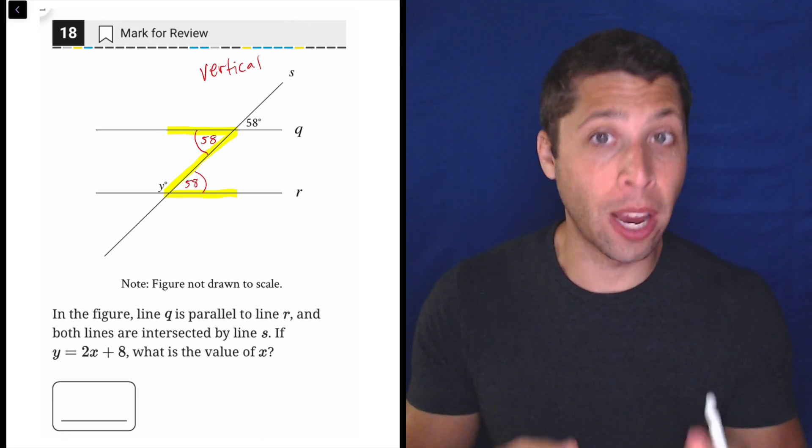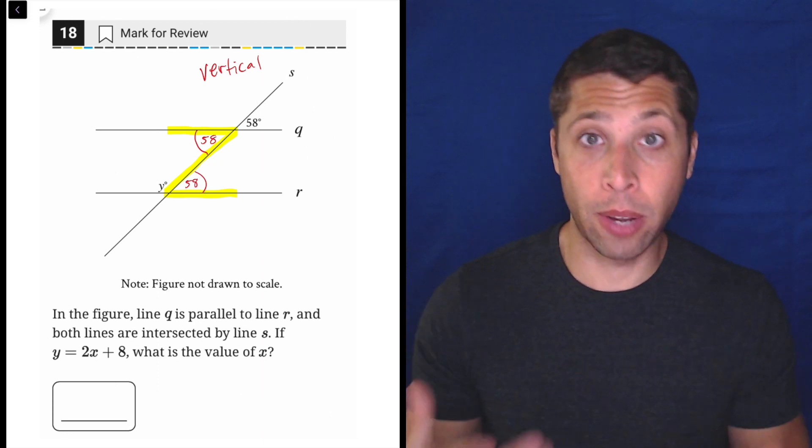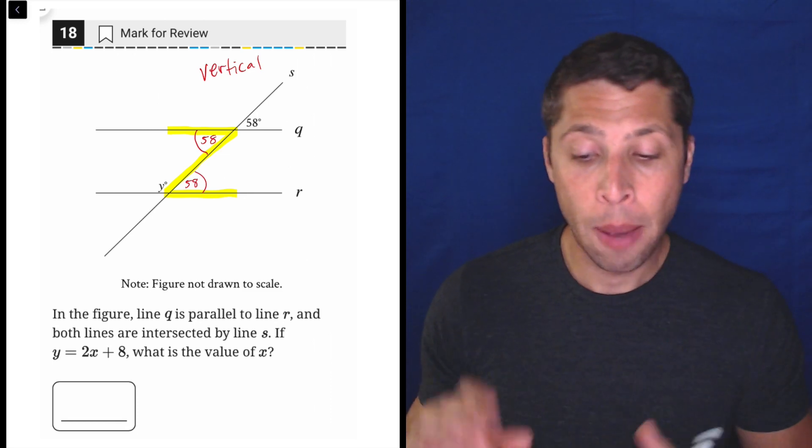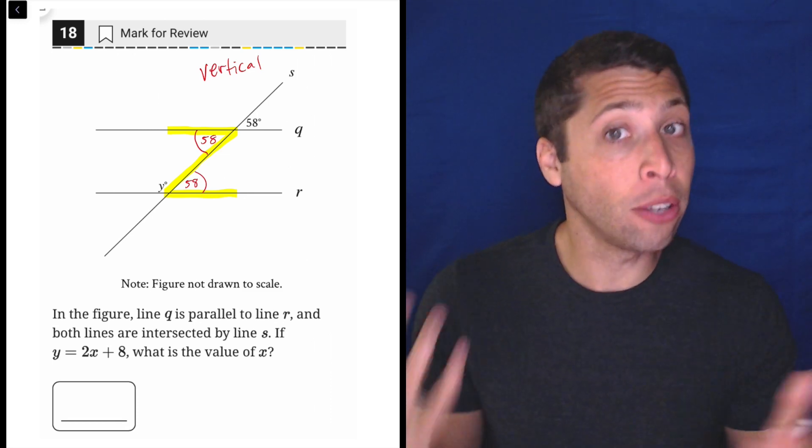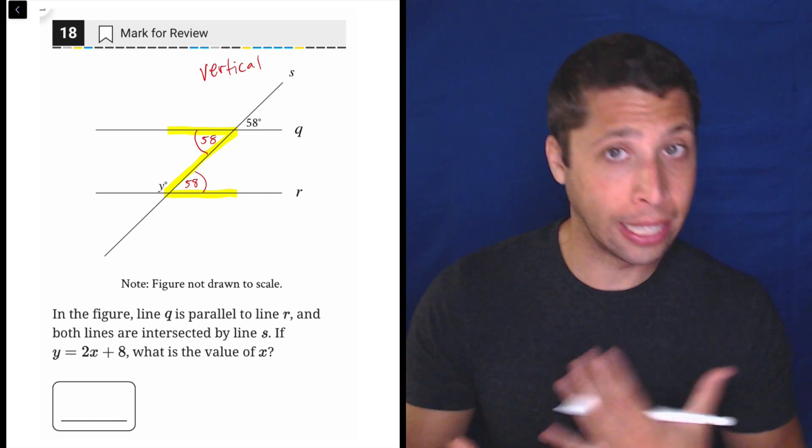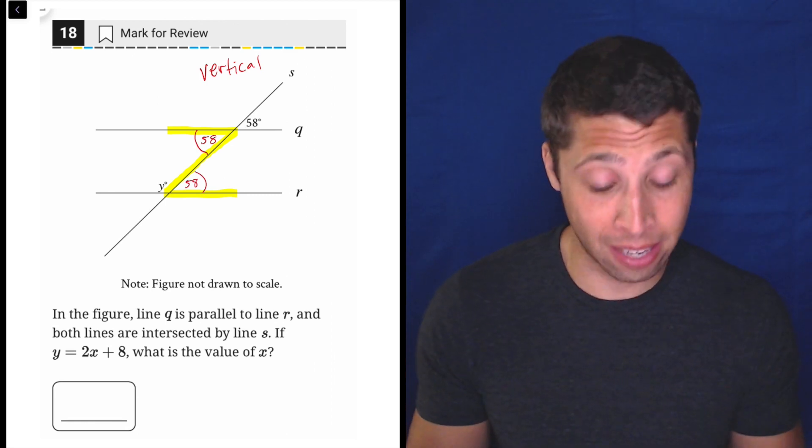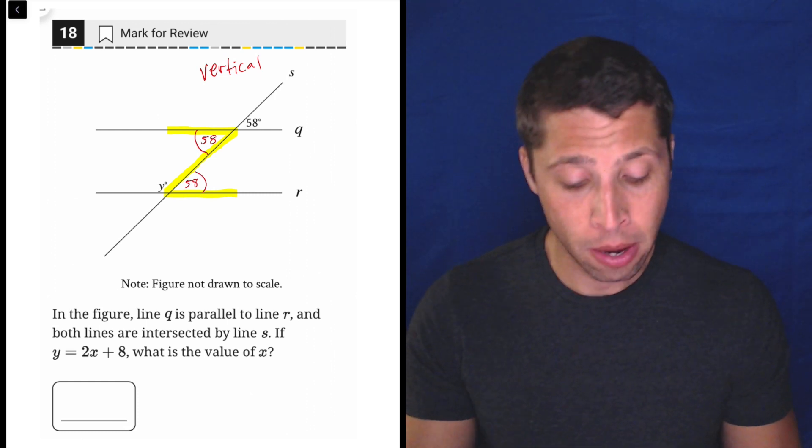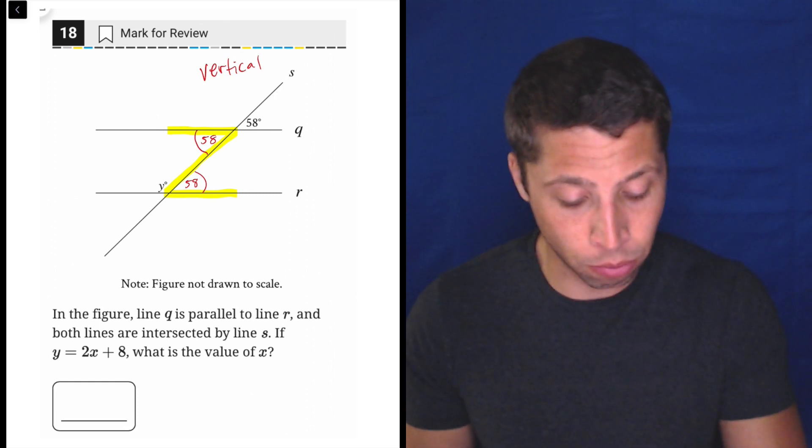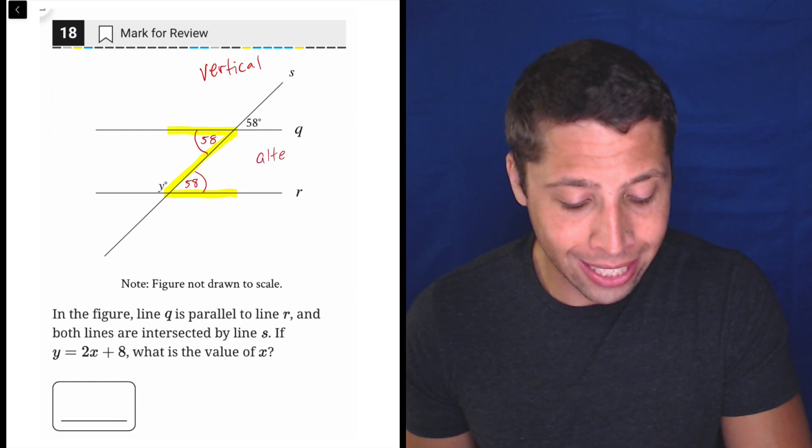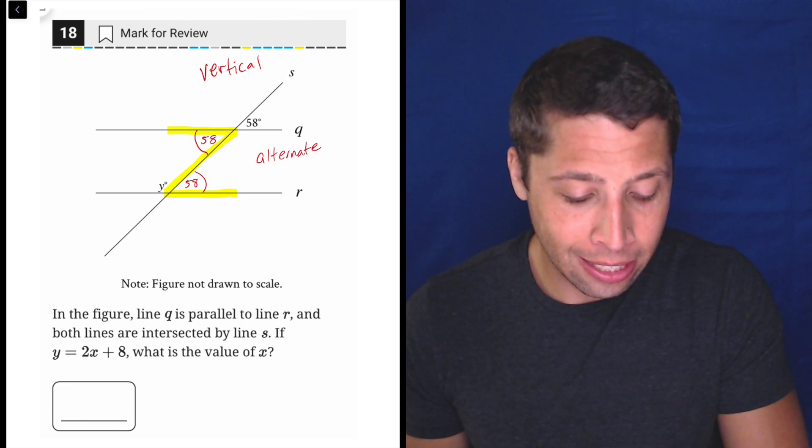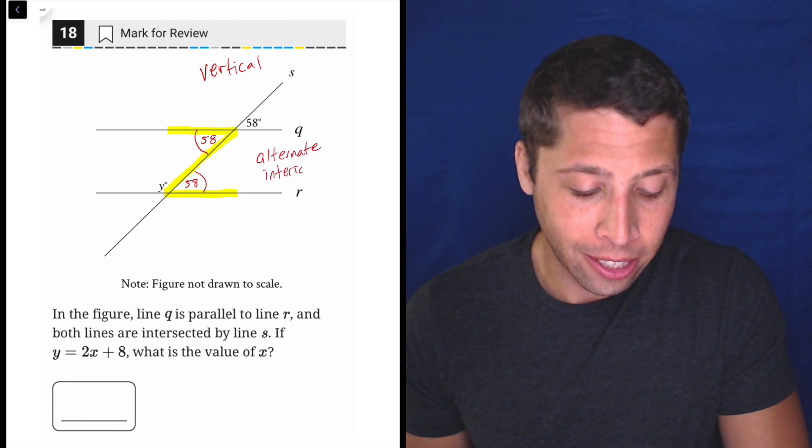A lot of times they'll just give you a shape that looks like this Z so you can see it obviously. But if it's buried in some other shape, if they tell you in some other geometry question that lines are parallel, odds are good you're going to use this rule in some way. And the technical name for these two 58s that I just wrote is that these are alternate interior angles.